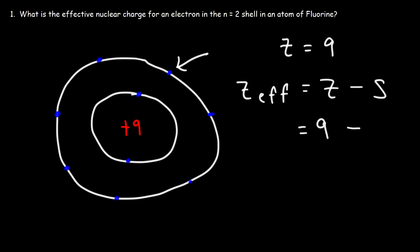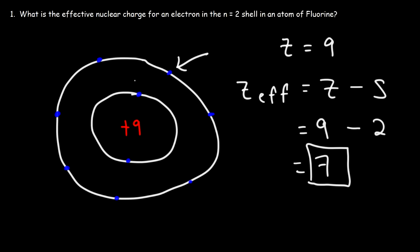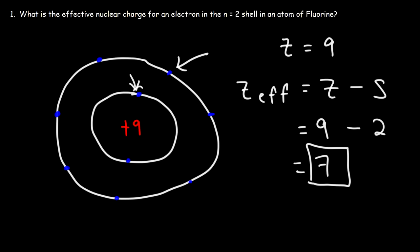So it's 9 minus 2, which is 7. That is the effective nuclear charge on an n equal 2 electron. The n equal 1 electrons have an effective nuclear charge of about 9, because there are no other electrons between them and the nucleus. So they feel the greatest nuclear charge because they're so close to the nucleus.